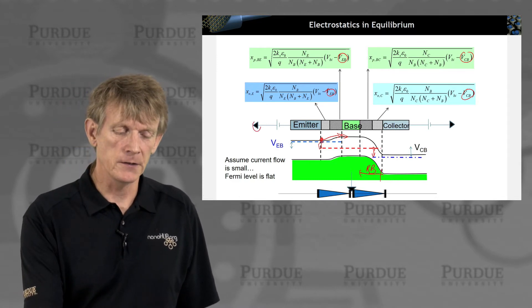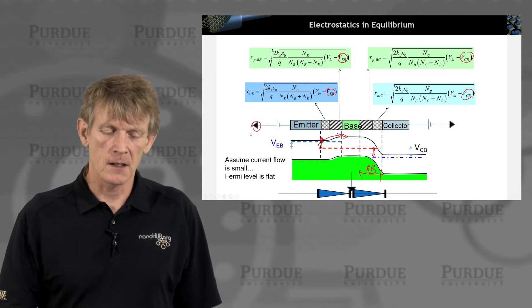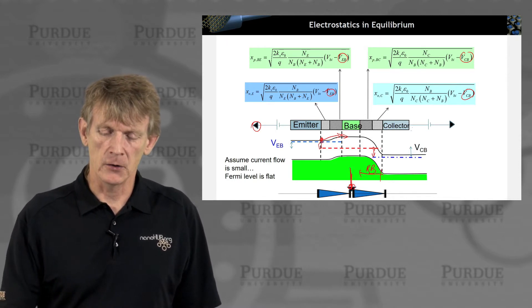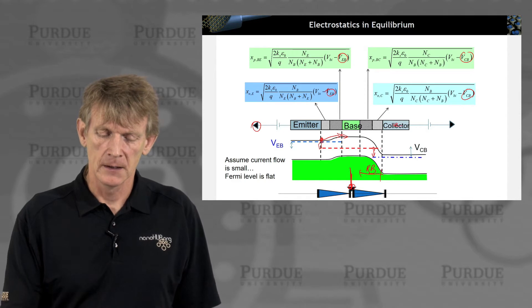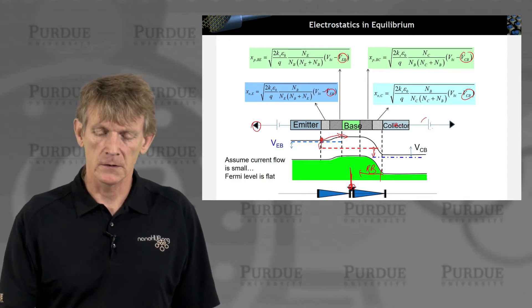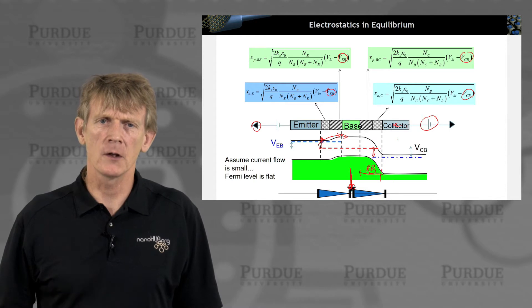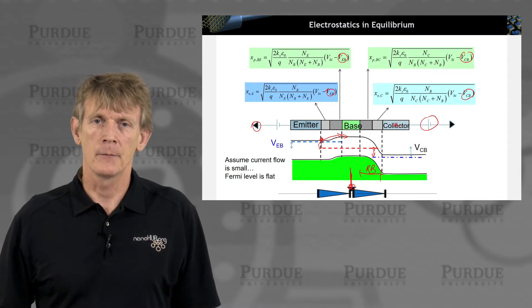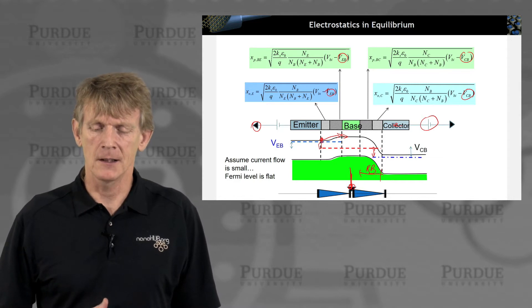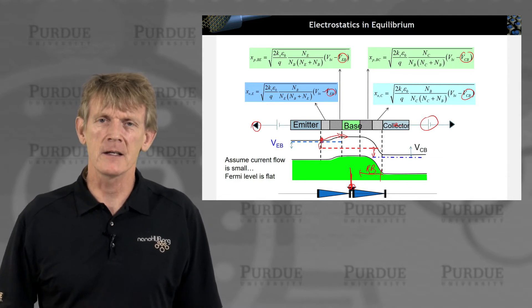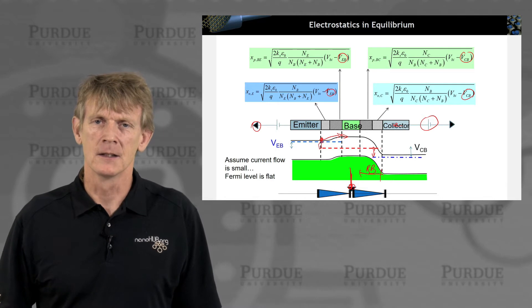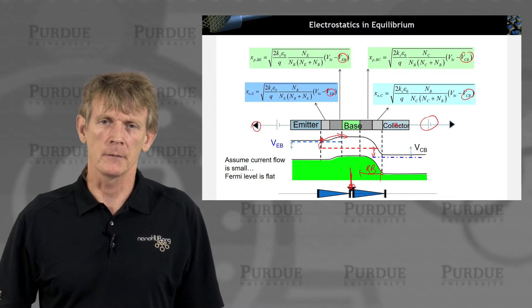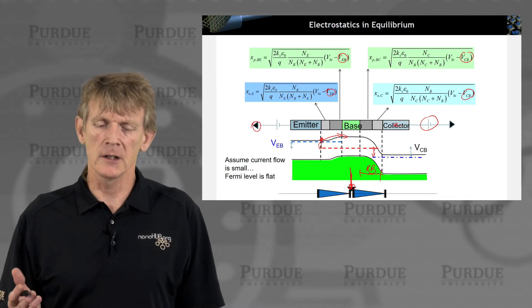We're applying a voltage between the emitter and the base, where we have a contact here to the base, and we're applying a voltage here between the collector and the base. We're shifting the quasi-Fermi levels around, just like what we had done in p-n junctions. So the expressions are absolutely identical.